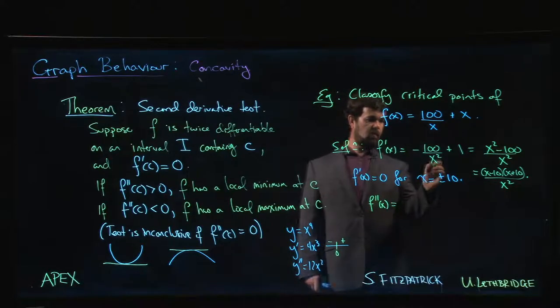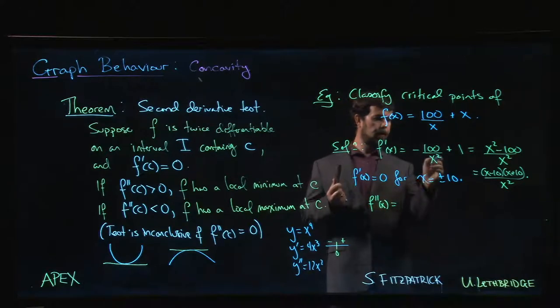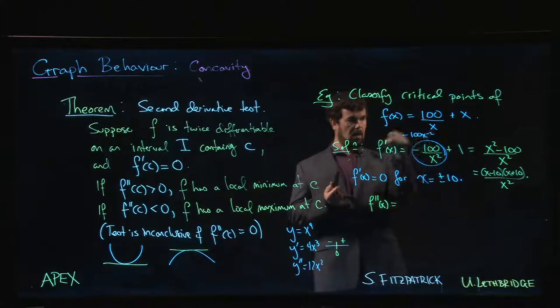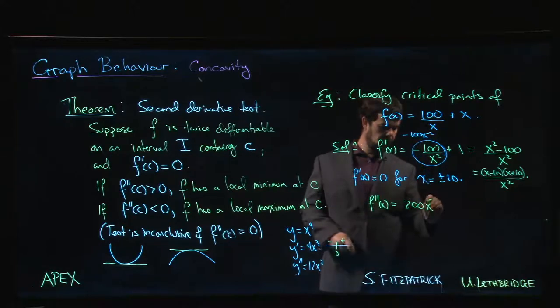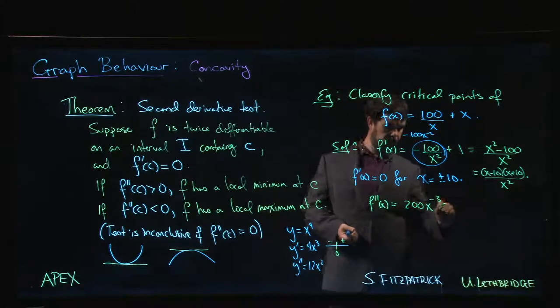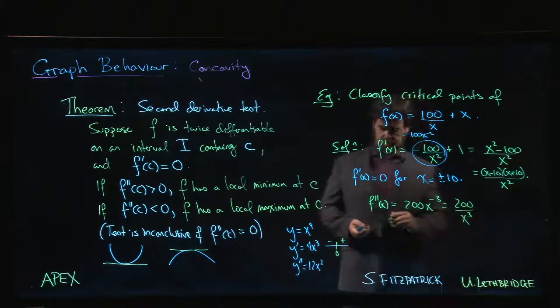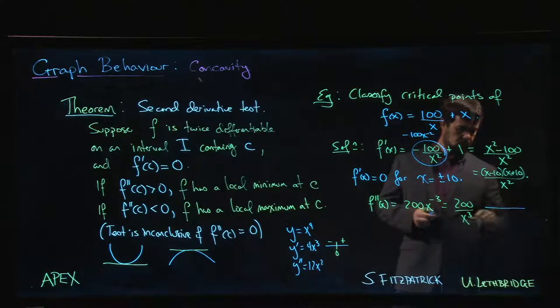f'' is going to be—as a reminder, we could write that as -100x^(-2). So power rule: 2 comes down, we get 200x, subtract 1 from the exponent to get x^(-3). That's 200/x³.